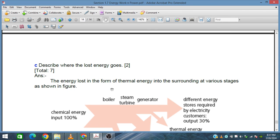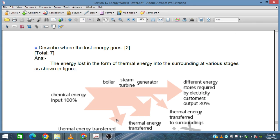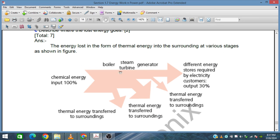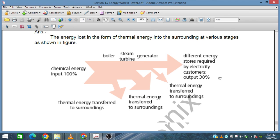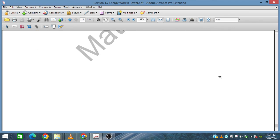Describe where the energy loss goes. The energy is lost in the form of thermal energy into the surrounding at various stages: from chemical energy in the boiler where steam is produced, thermal energy is lost to the surroundings; in the steam turbine where work is done, some energy is also lost to the surroundings; in the generator, mechanical energy converts to electrical energy and again some thermal energy is lost. Eventually, electrical energy is produced and goes to the customer with an efficiency of 30 to 35%. This is all from this chart.